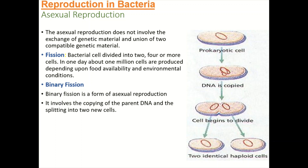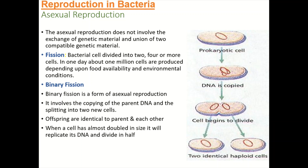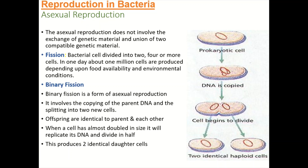Binary fission involves the copying of parent DNA and the splitting of one cell into two daughter cells. The daughter cells are identical to the parent cell and to each other. When a cell has almost doubled its size, it replicates its DNA. The DNA is replicated and the cell divides into two cells, producing two identical daughter cells which are genetically and morphologically similar to each other.